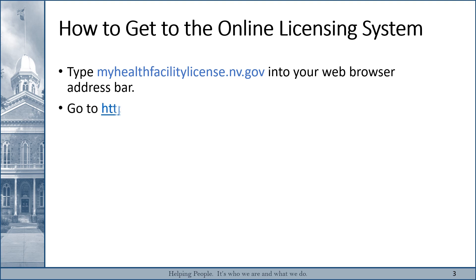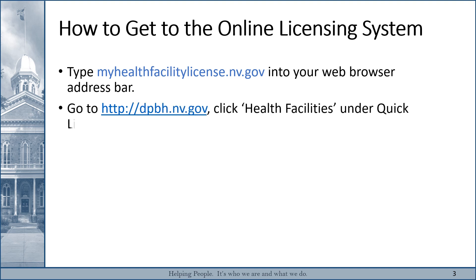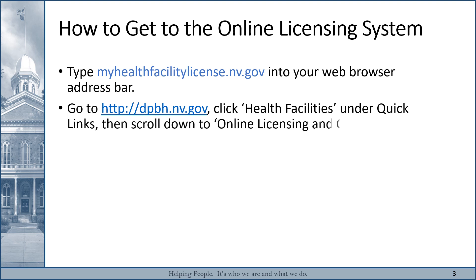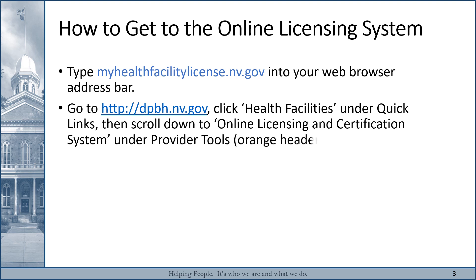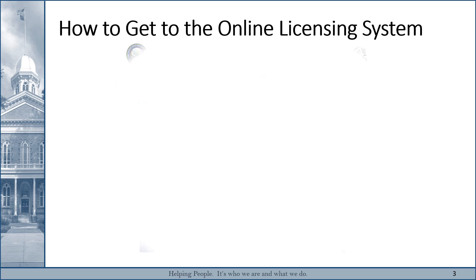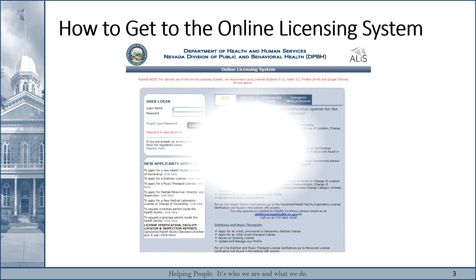Alternatively, you can go to dpbh.nv.gov, click Health Facilities under Quick Links, then scroll down to Online Licensing and Certification System under the orange Provider Tools header. Either way, you'll end up at the Licensing System Login page.